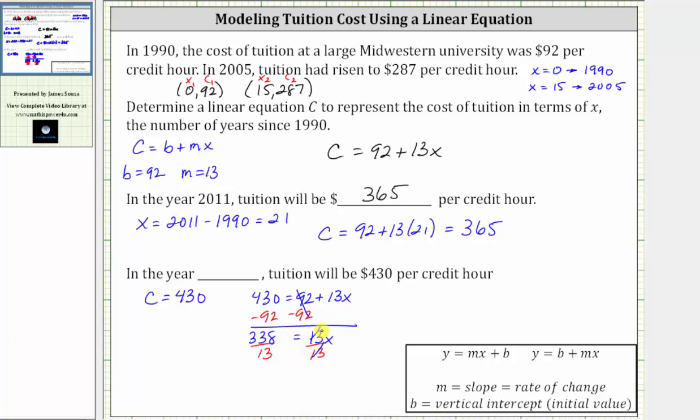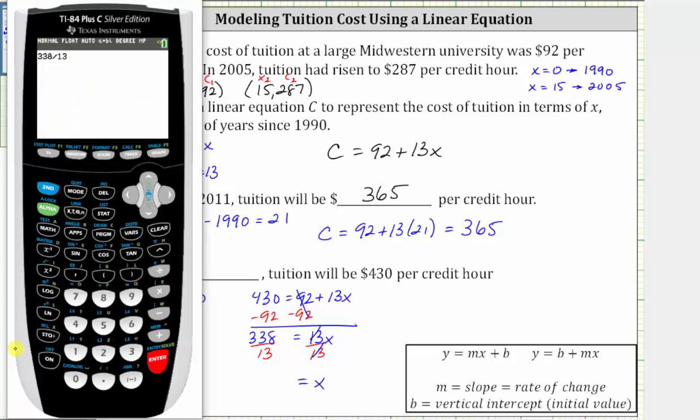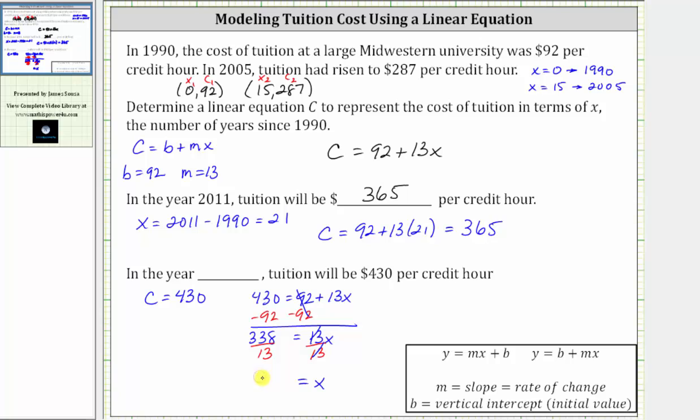The last step is to divide both sides by 13. We have x equals 338 divided by 13, which equals 26. Our answer is not 26; we need to determine what year this represents.